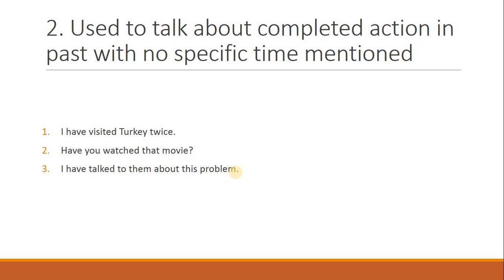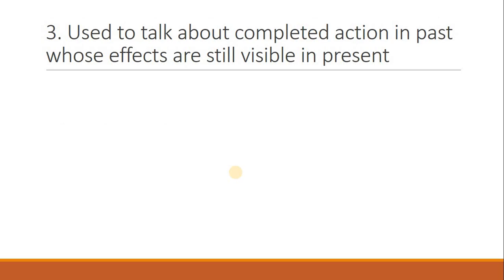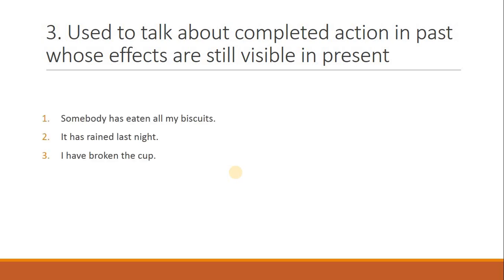Third use: Present Perfect Tense is also used to talk about a completed action in the past whose effects are still visible in the present۔ یعنی کام ماضی میں مکمل ہوا لیکن اس کا effect اب بھی نظر آ رہا ہے۔ Example 1: Somebody has eaten all my biscuits — کسی نے میرے سارے biscuits کھا لیے، کام ماضی میں ہوا اور اب جار خالی ہے۔ Example 2: It has rained last night — گزشتہ رات بارش ہوئی، اب بھی باہر road گیلی ہے۔